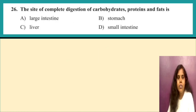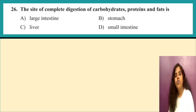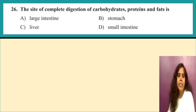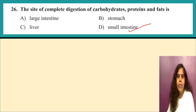Question 26: the site of complete digestion of carbohydrate, protein, and fats. Complete digestion means it should fully break into smaller particles. This will occur in the small intestine, so option D will be the correct answer.